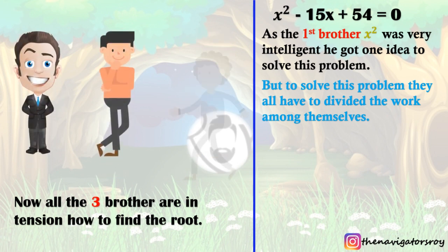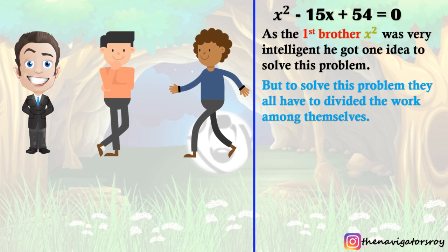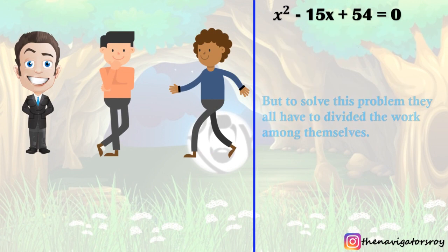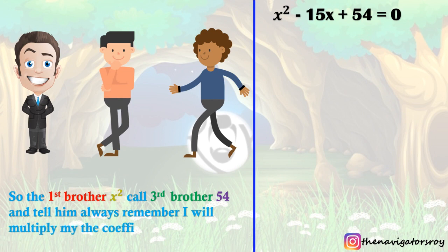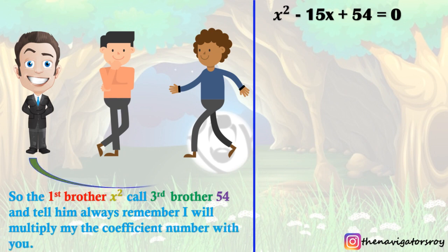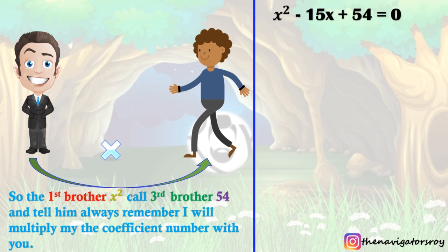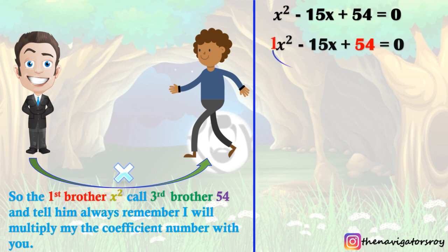What is the third brother's first job? We always remember that the coefficient — which I will give to the third brother — we need to multiply. The third brother's job involves the number 54, so the answer is 54.